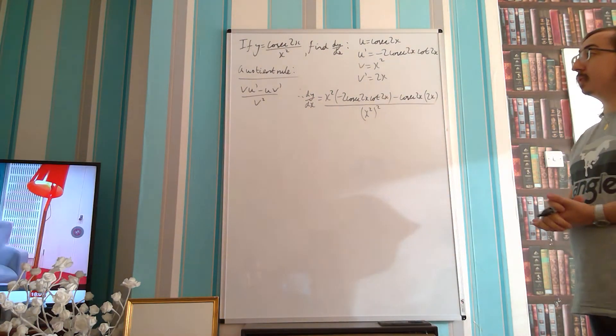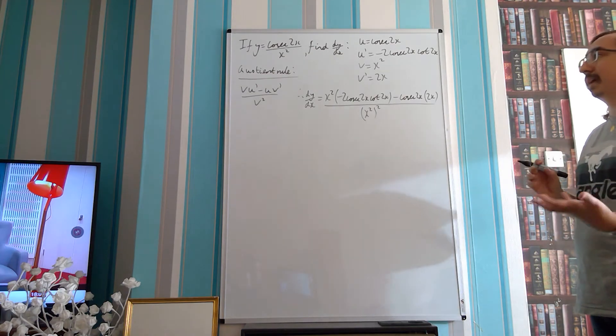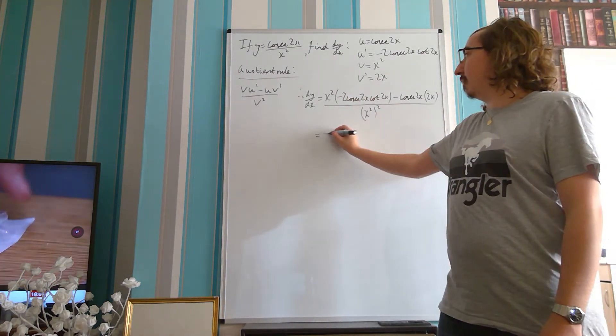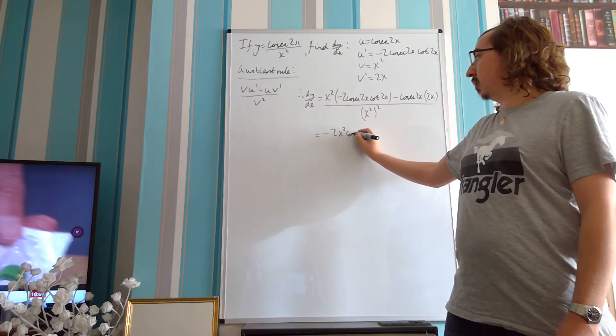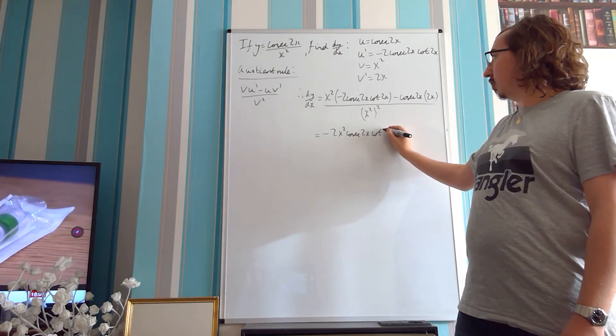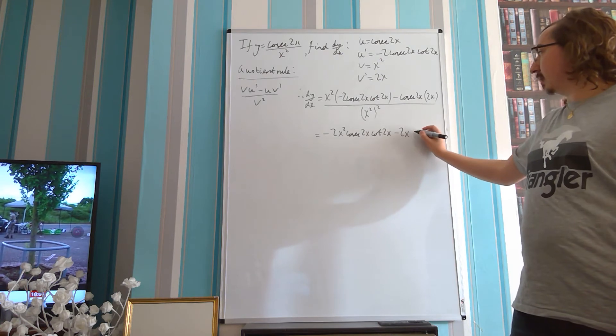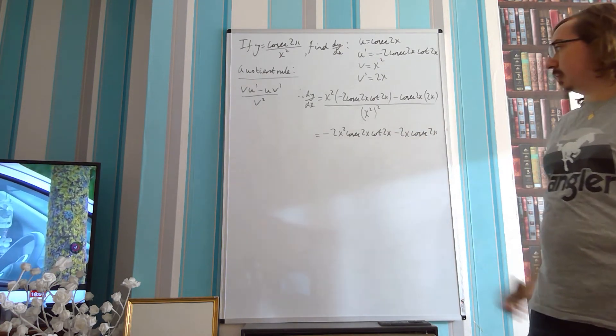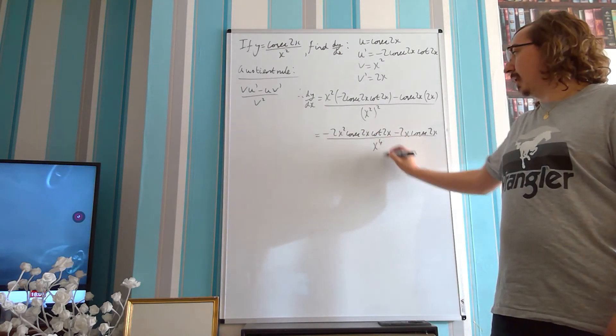And we're going to say, fine, we've used our quotient rule and that is correct, but we can simplify this a little bit, make it a little bit nicer. So we can say, to start with, we have minus 2x squared cosec 2x cot 2x minus 2x cosec 2x all over x to the power of 4.